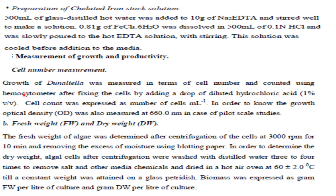For measurement of growth and productivity, cell number can be measured using a hemocytometer, or growth can be observed by measuring optical density at 660 nanometers. In pilot-scale studies, fresh weight or dry weight using the gravimetric method can also be used. The algal culture is harvested and the difference in weight before and after drying is analyzed for growth.